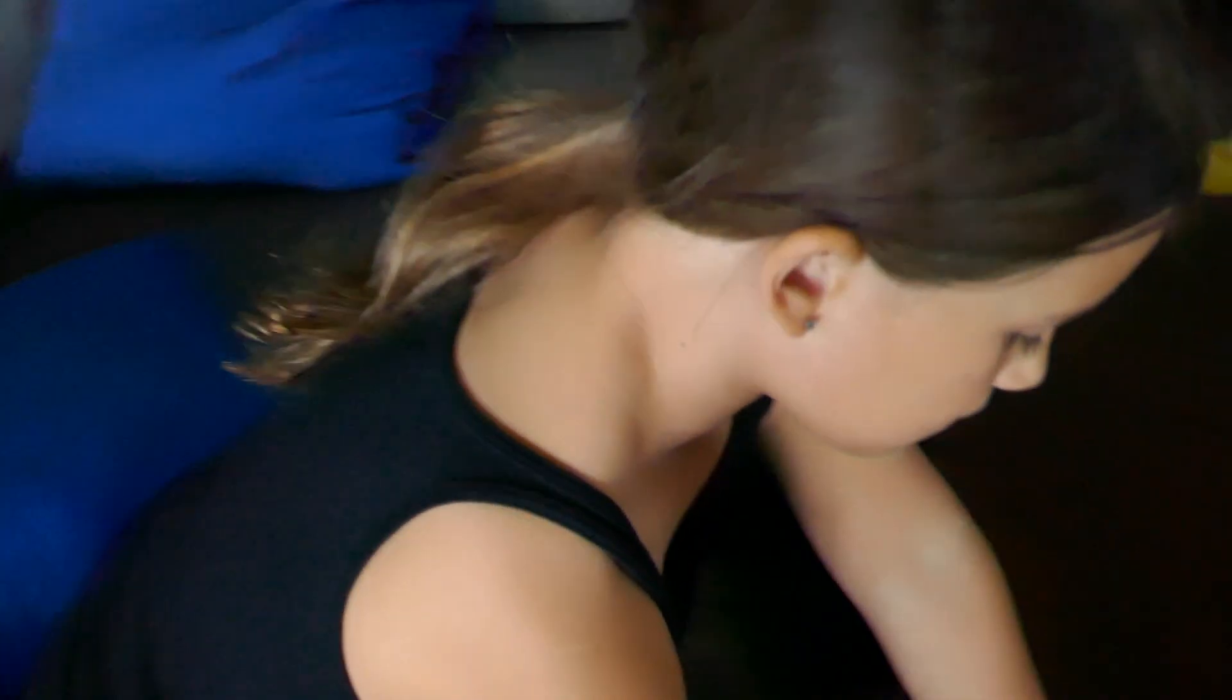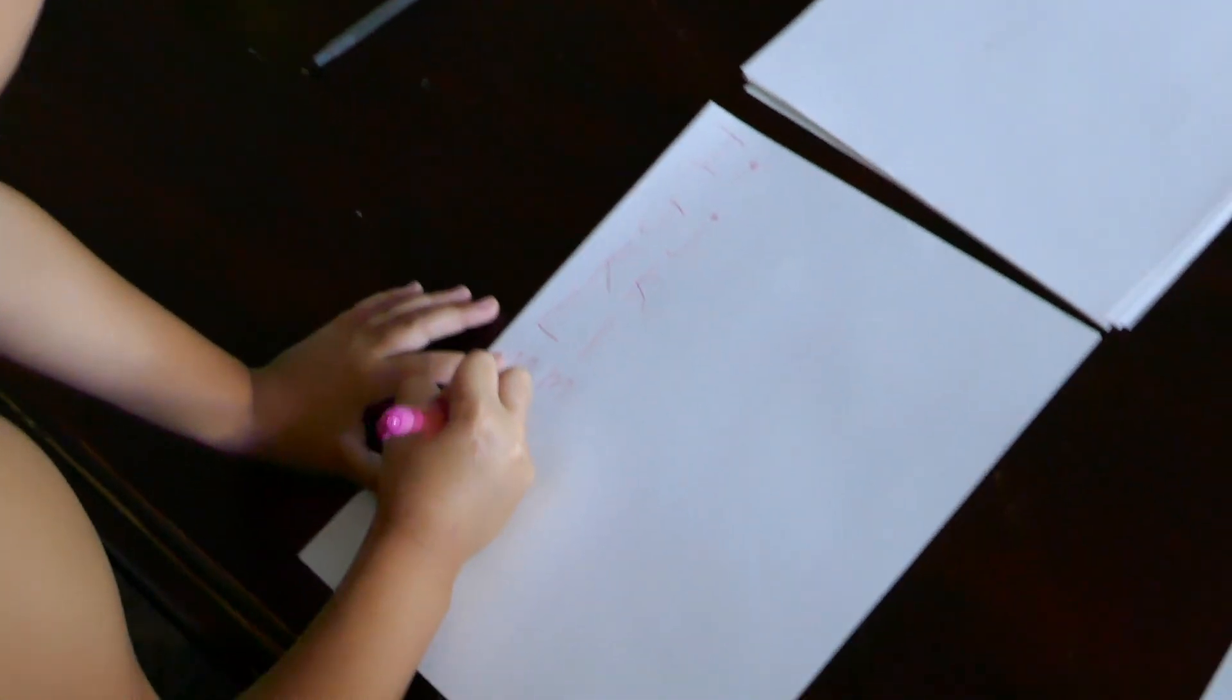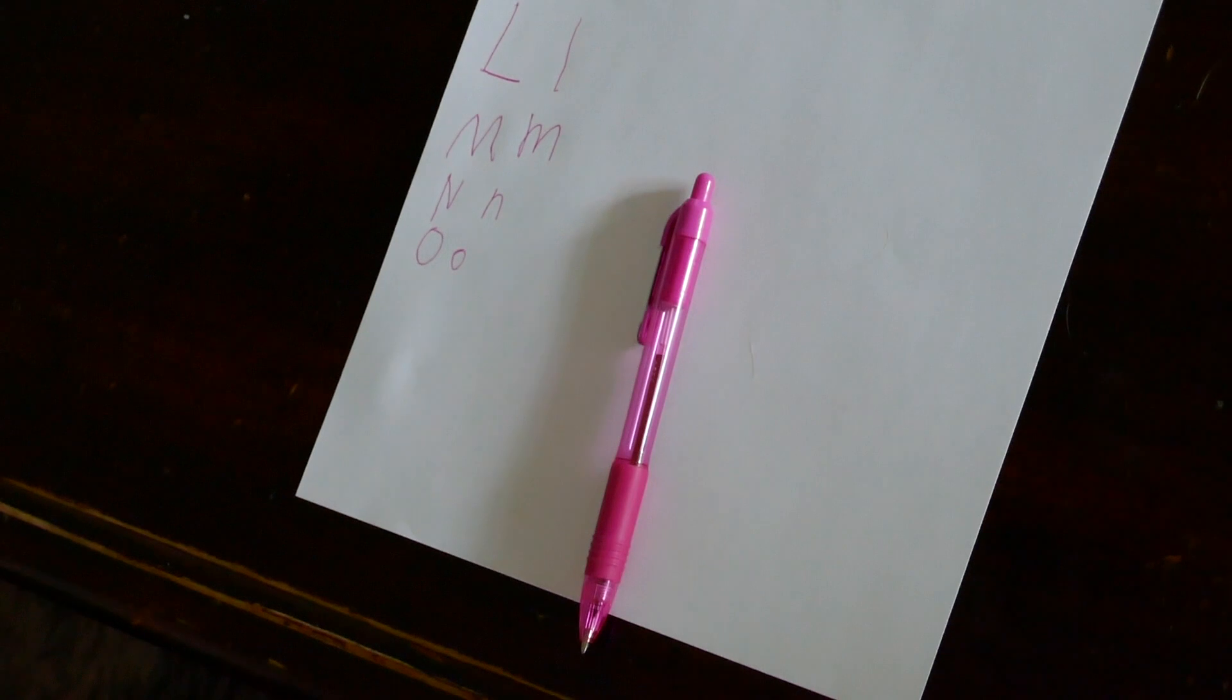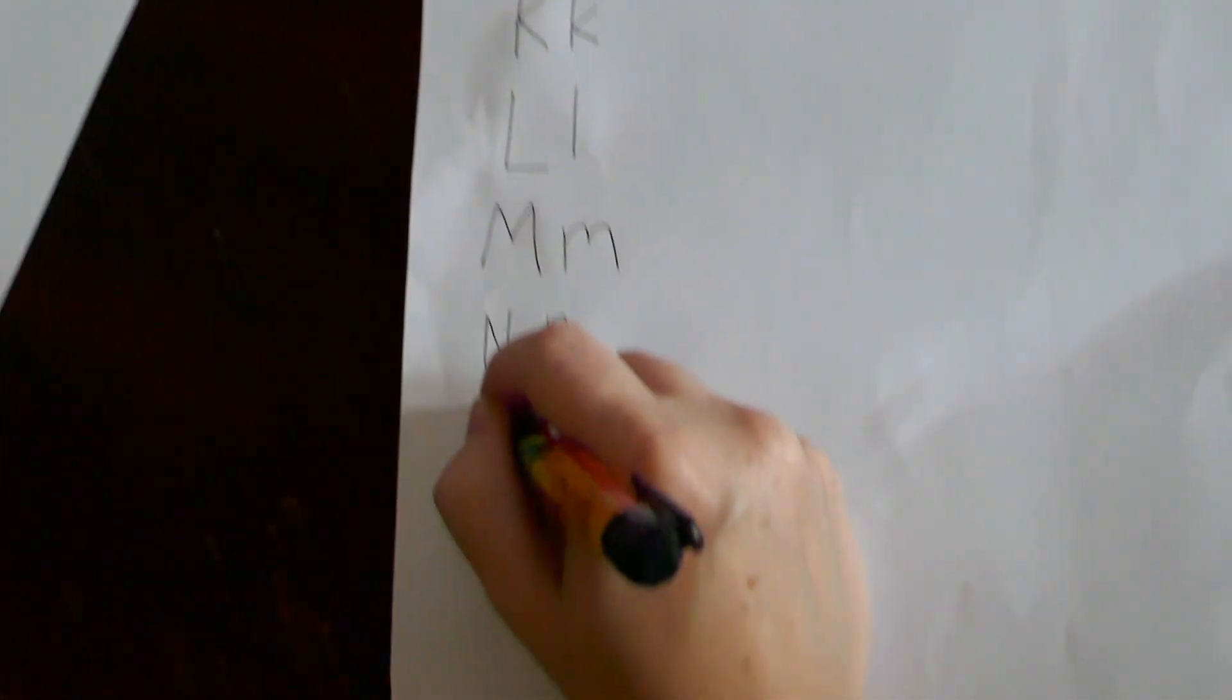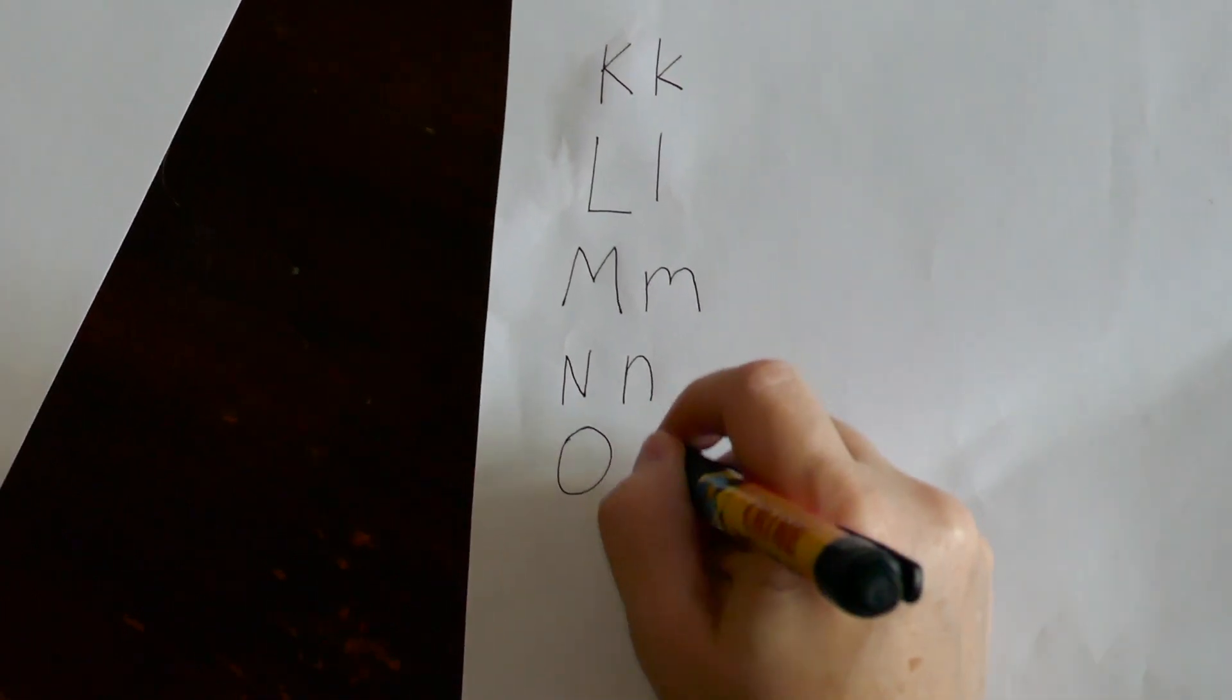After the N comes O. Yes. And this is another letter that the lower and uppercase letters look almost exactly the same. Very good. So you have an O, which is just a circle, and the lowercase o is just a smaller circle.